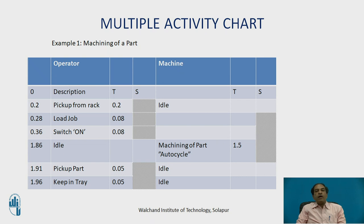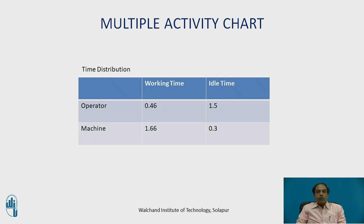After machining, the operator picks up the part, taking 0.05 minutes, and then places the job in the tray, again taking 0.05 minutes — in both cases the machine is idle. The total time distribution for this cycle is: operator working time 0.46 minutes, idle time 1.5 minutes; machine working time 1.66 minutes, idle time 0.3 minutes. This shows how much time the operator and machine are each busy and idle.